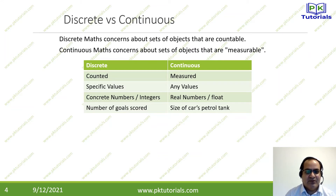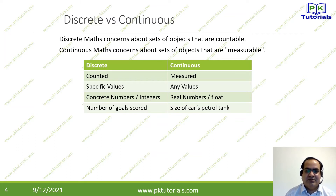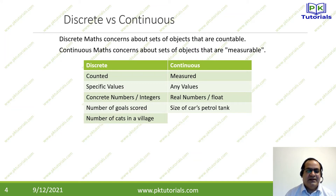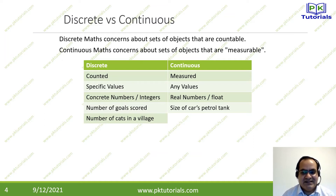The number of goals scored by a team or player cannot be 3.5 — it must be a whole number. Another example is the number of cats in your house: 10, 20, 30, 50. That is a countable, discrete number.